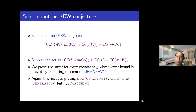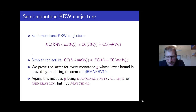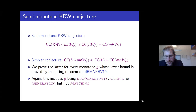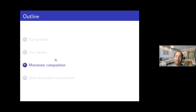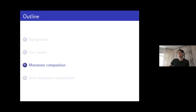We also define the composition of the universal relation with the monotone KW relation, which is defined similarly except we remove F from the picture: instead of promising that F outputs one on A and zero on B, we only promise that A and B are two different strings. This basically means A and B are valid instances of the universal relation. What we would really like to prove is the KW conjecture for the semi-monotone composition — that for any F and G, the communication complexity is the sum of the individual complexities. Unfortunately, we only know how to prove the simpler version where we replace the non-monotone KW relation of F with the universal relation.